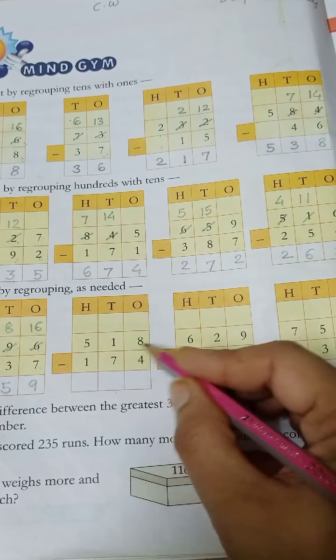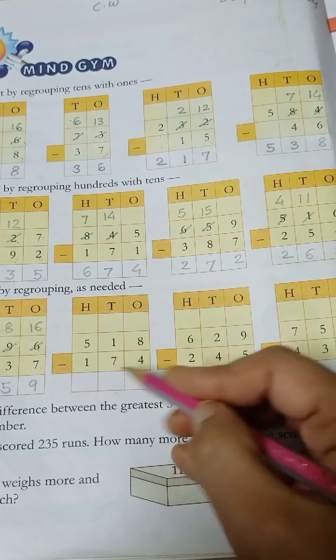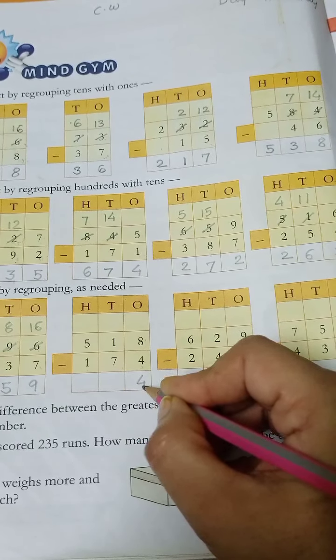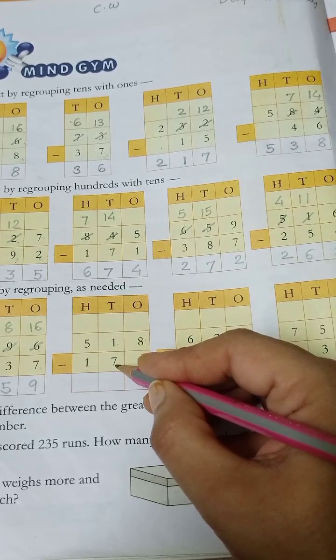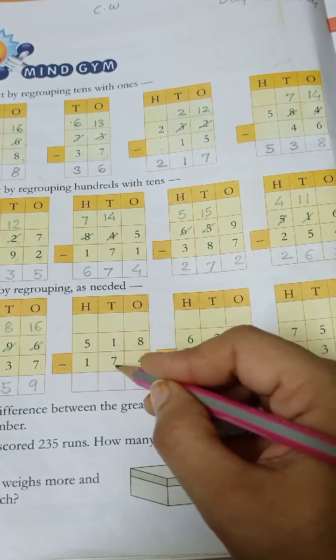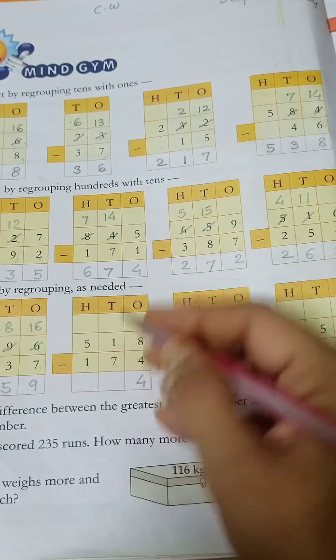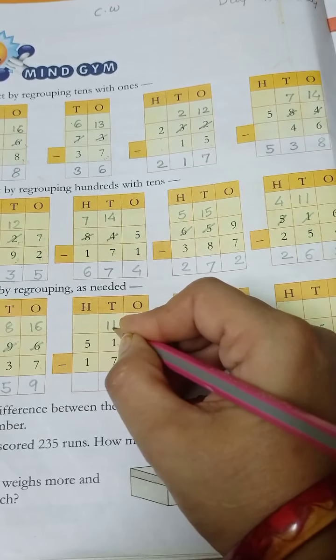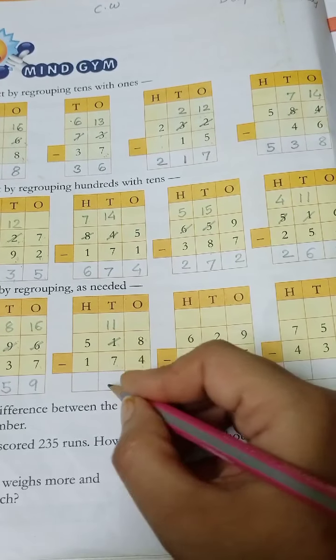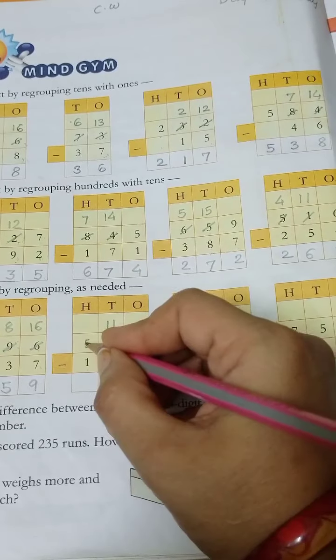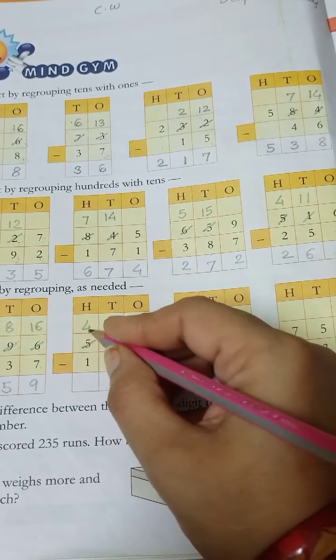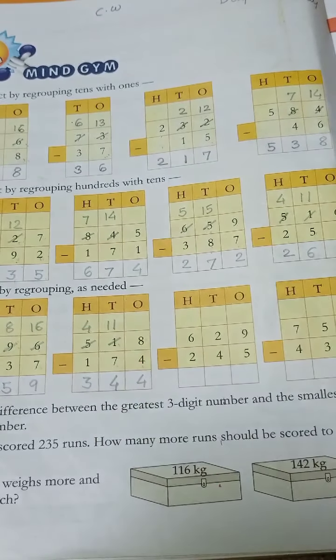Next, 518 minus 174. 8 minus 4 is 4. 1 minus 7, is it possible? No, because 1 is smaller number and 7 is greater number. Then 1 plus 10 is equal to 11. 11 minus 7, 1 cut, is 4. Then 5 minus 1 is 4. Then 4 minus 1 is 3. Clear?